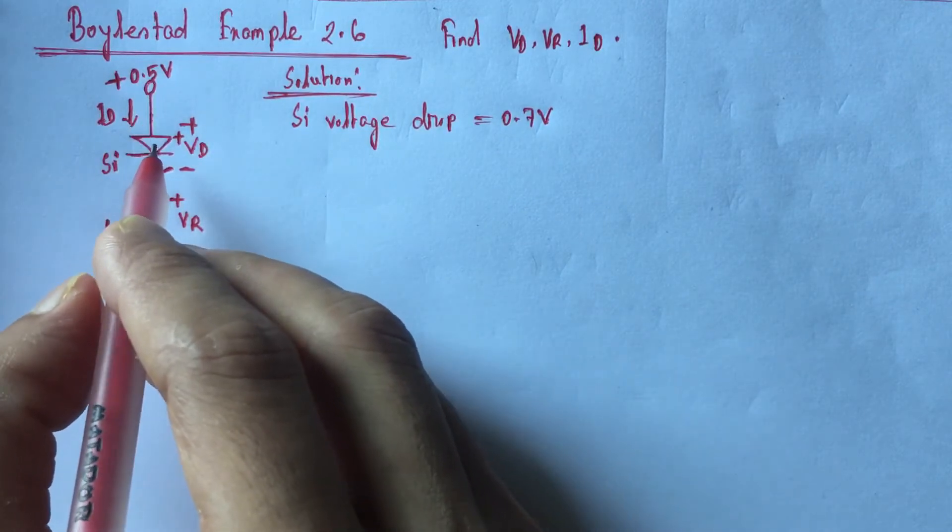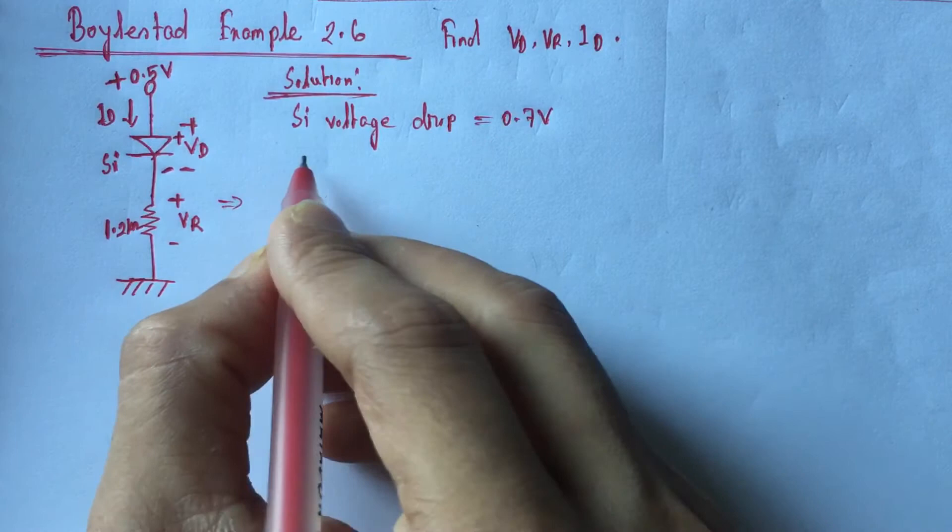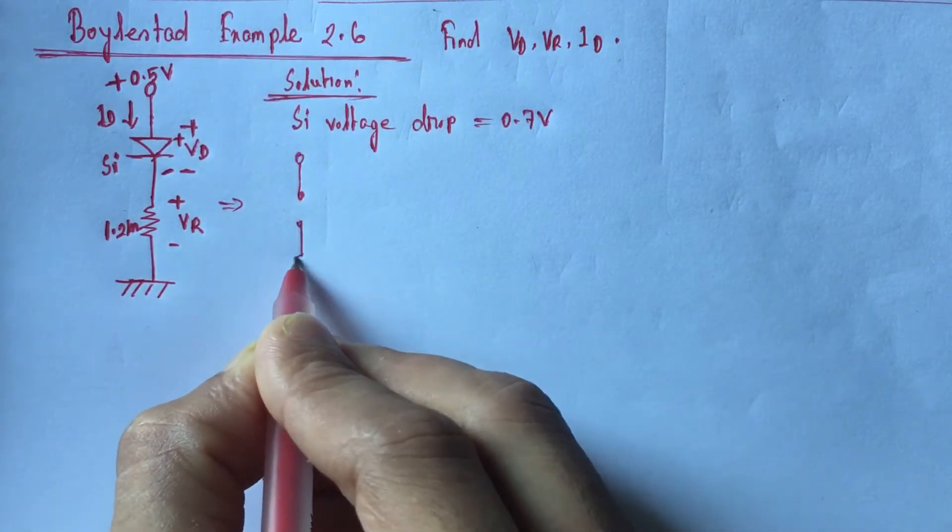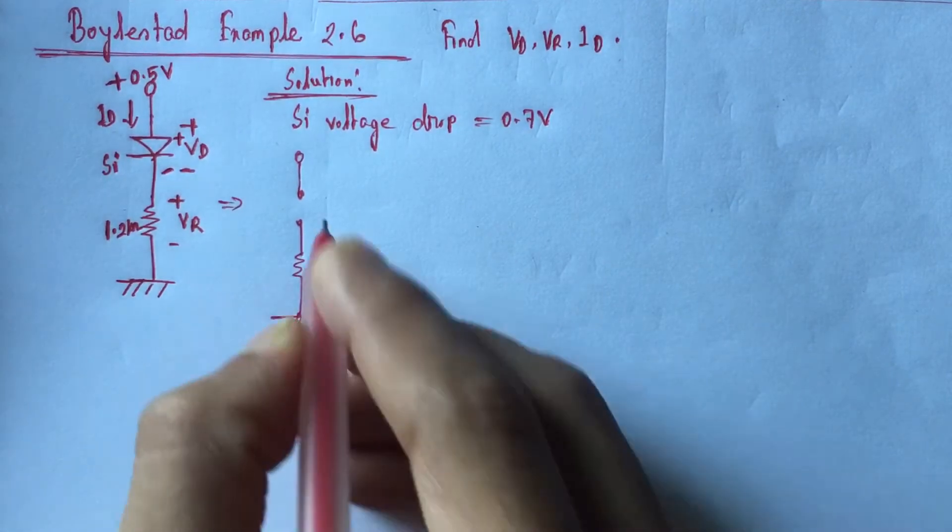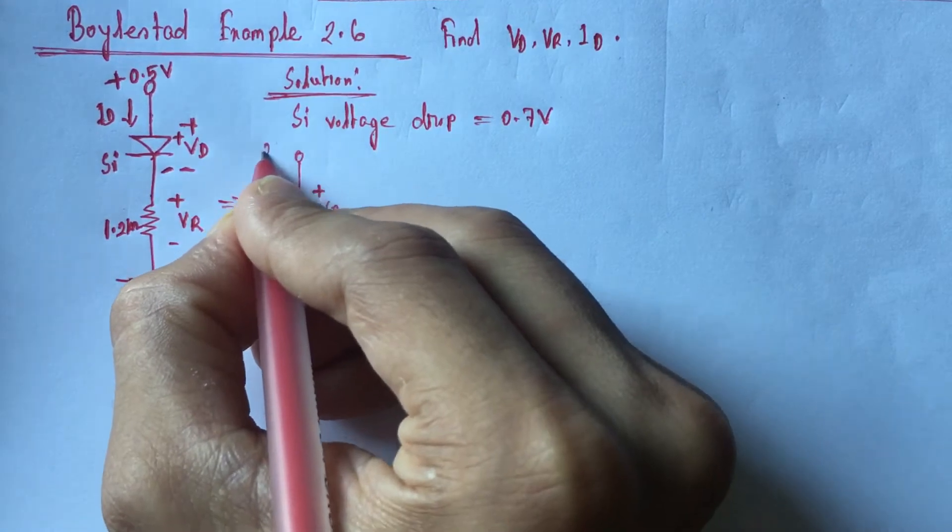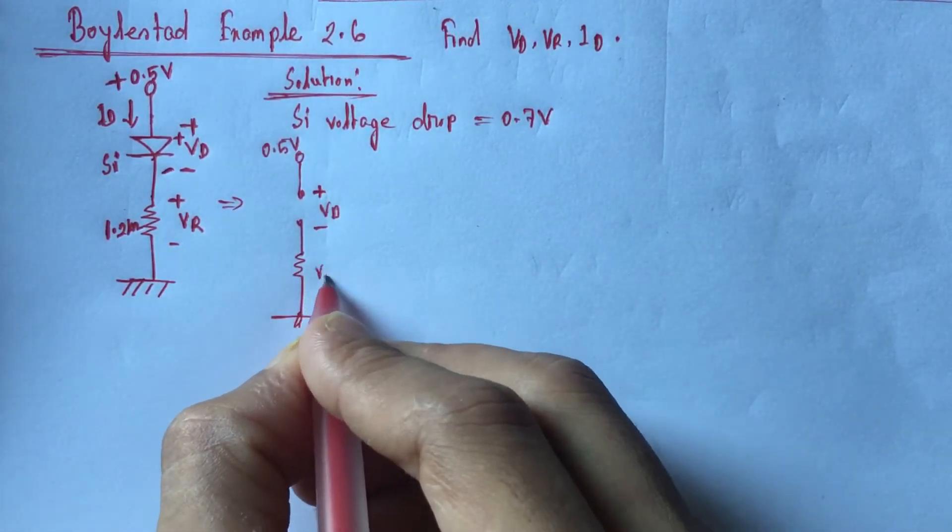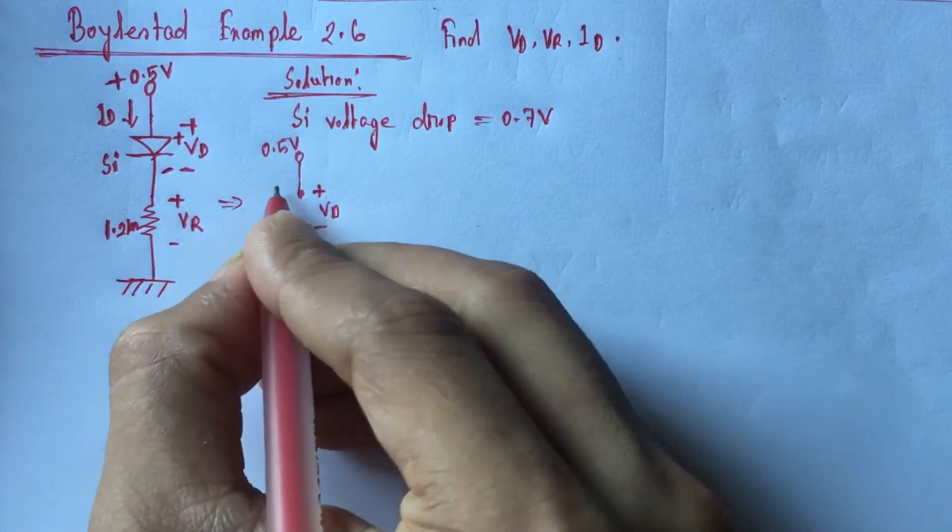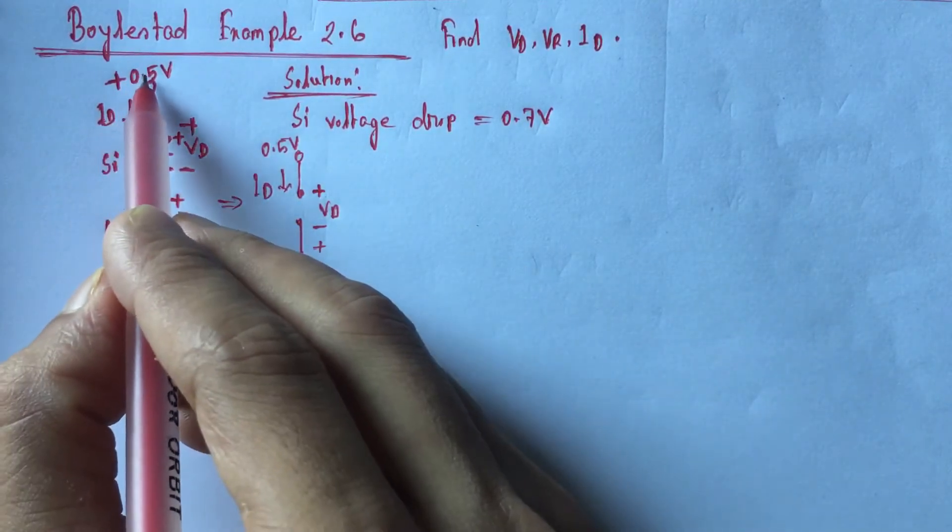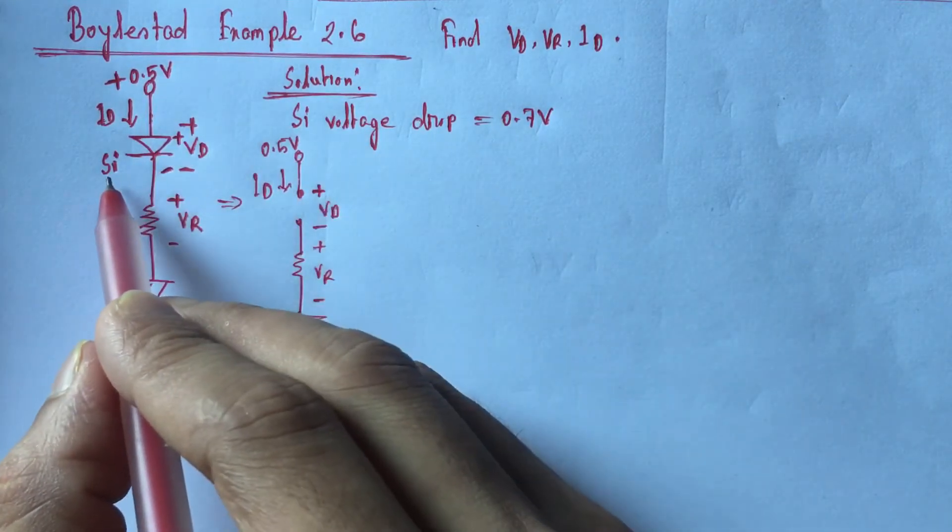So if we redraw the equivalent circuit, circuit will become as: plus, minus VD, 0.5 volt, VR, ID. So biasing voltage 0.5 volt is lower than the voltage drop of silicon diode.